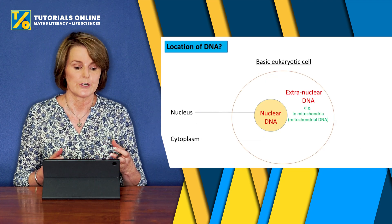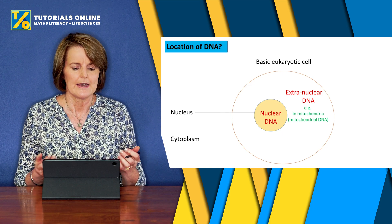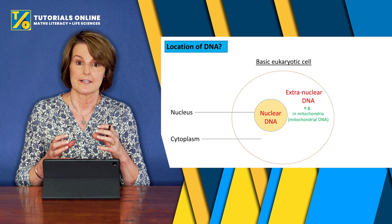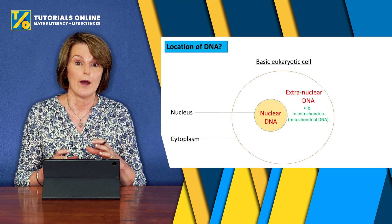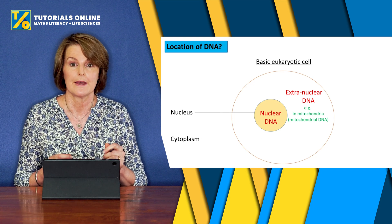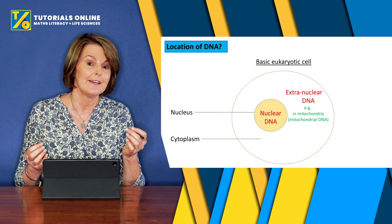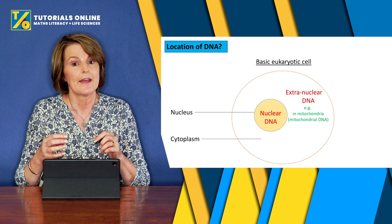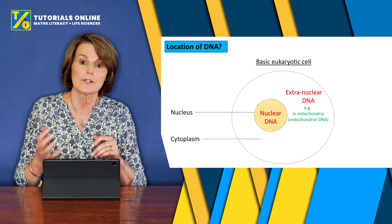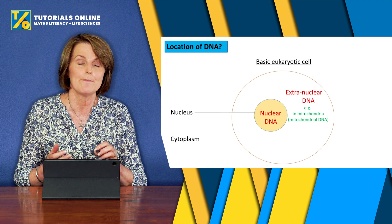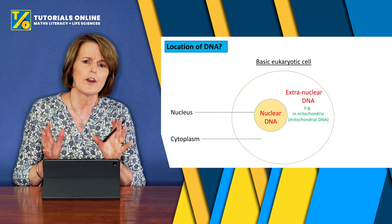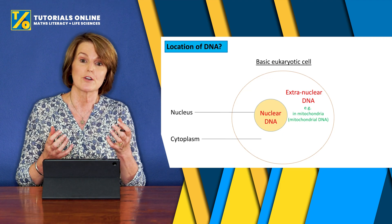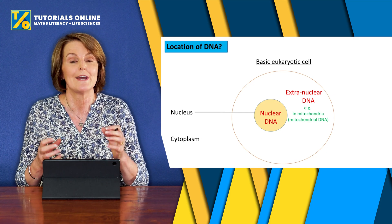Let's now look at the location — where do you find DNA? If you take a basic eukaryotic cell like this one, you have a nucleus inside the cell and around the nucleus you have cytoplasm. You have nuclear DNA which is inside the nucleus, and then you have extra-nuclear DNA — 'extra' meaning outside. So it's outside the nucleus; much of it is found in mitochondria, and we call it mitochondrial DNA, which you will hear about in grade 12.